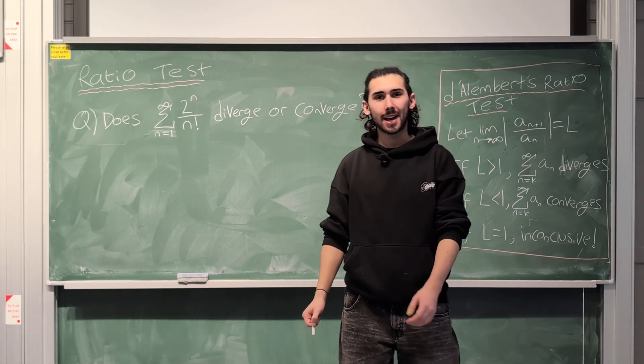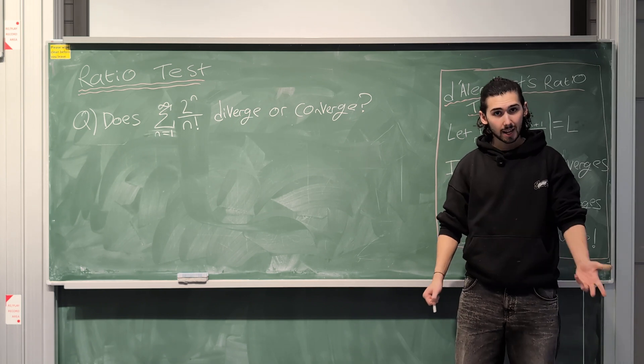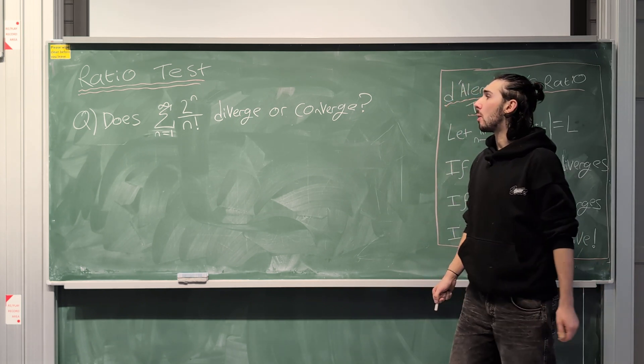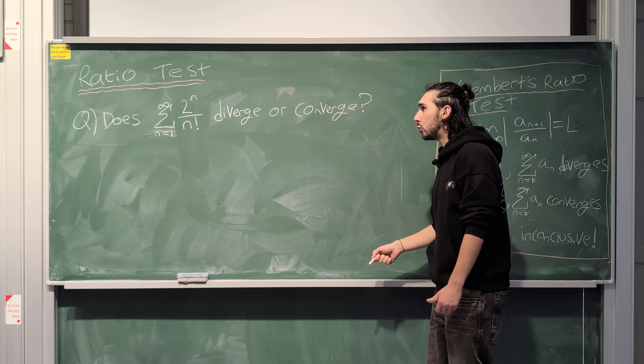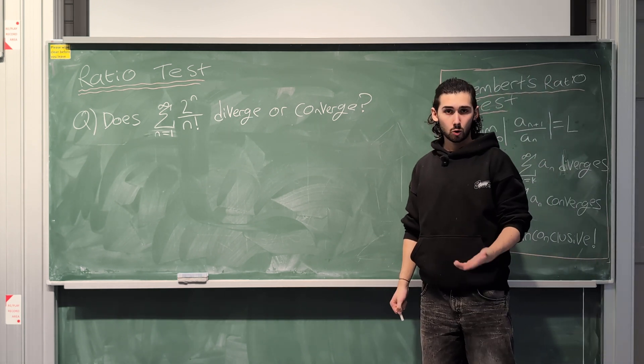Hello there guys, welcome back to another Epic and Extrable Maths video. In this video we're looking at the ratio test for the second time and we want to know whether the sum from n equals 1 to infinity of 2 to the n divided by n factorial diverges or converges.